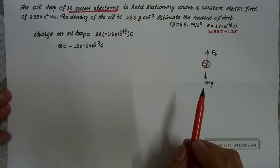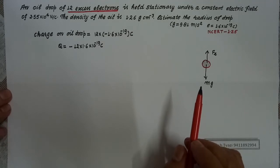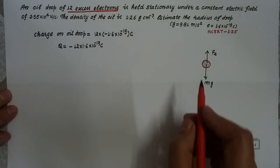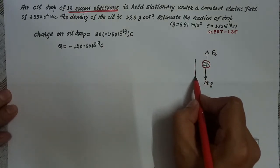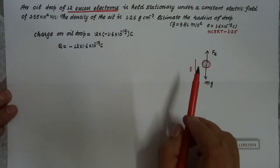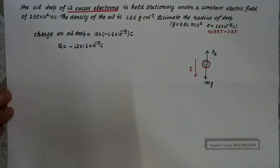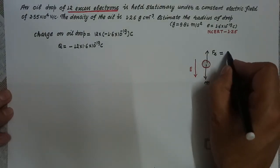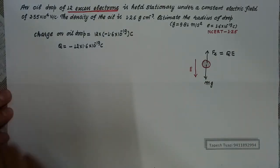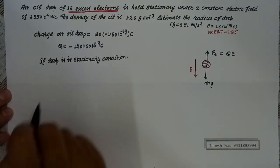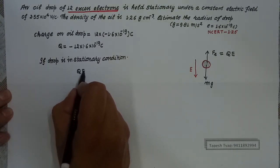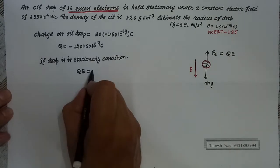Because this oil drop has a negative charge, the electrostatic force on a negative charge is opposite to the direction of the electric field. So for the force to be upward, the electric field direction must be downward. The value of electrostatic force is Q × E. If the oil drop is in stationary condition, then QE must equal Mg.